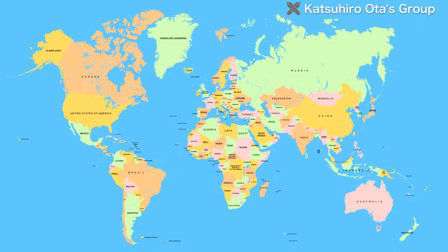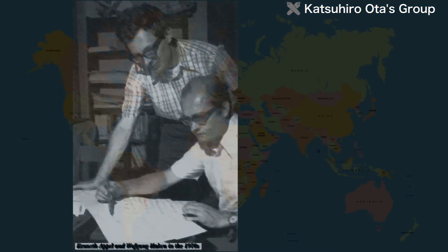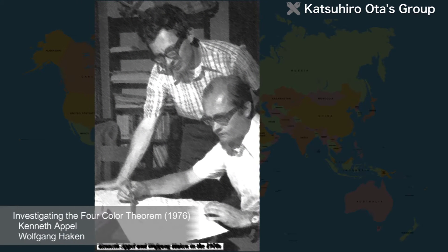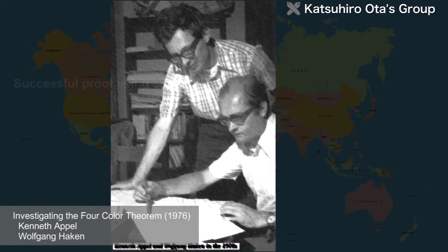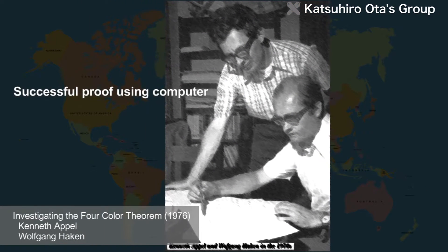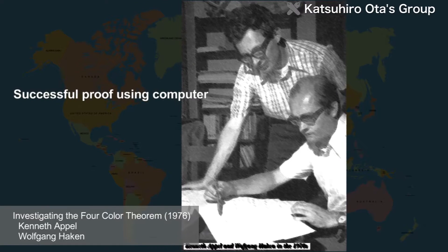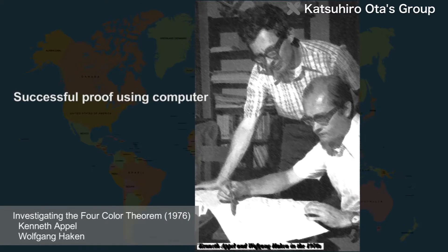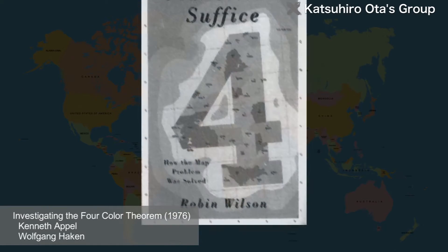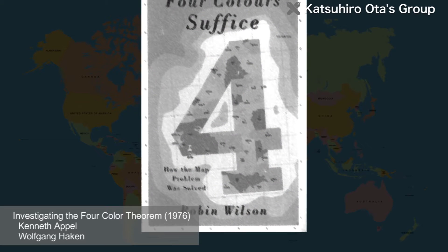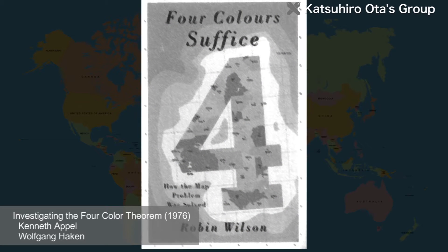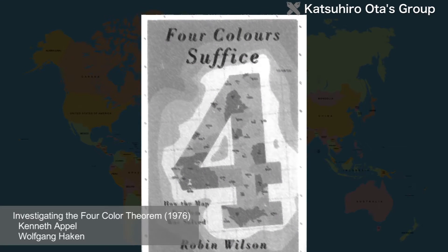But in 1976, Apple and Haken succeeded in proving it using a computer. Until then, it was thought that proof in mathematics had to be achieved through papers that built up the logic involved. So the proof of the Four-Color Theorem using a computer attracted considerable attention.